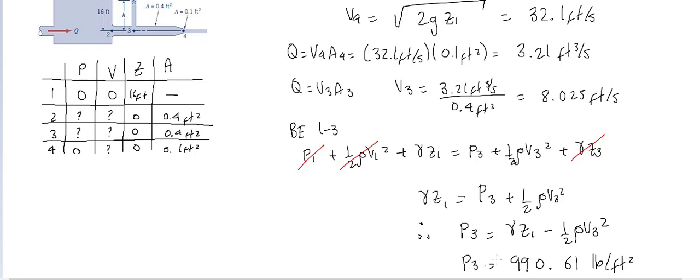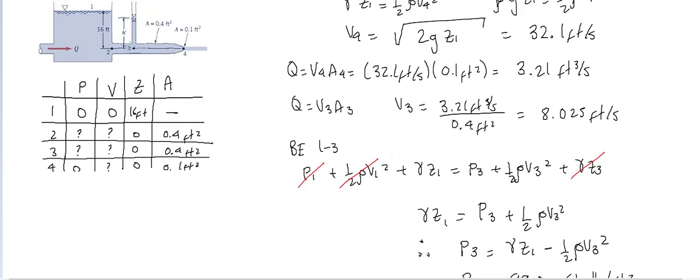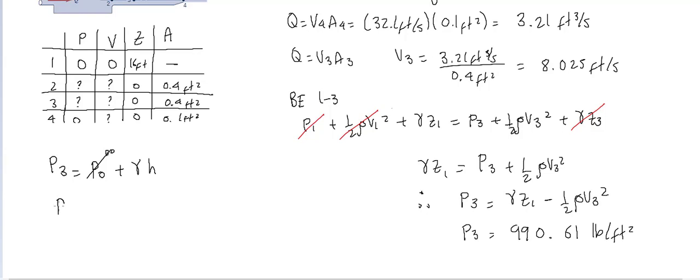So now that we have the value of the pressure, we simply use hydrostatic pressure to find the value of h. We know that p3 is equal to p at the top plus gamma h. And since this is gauge, this value becomes 0. Therefore, the value of p3 is simply equal to gamma h. And then we substitute, so h is simply p3, which is 990.61 pounds per feet squared. And we divide by the gamma of water, which is 62.4 pounds per feet cubed. And we found that this elevation is equal to 15.87 feet.